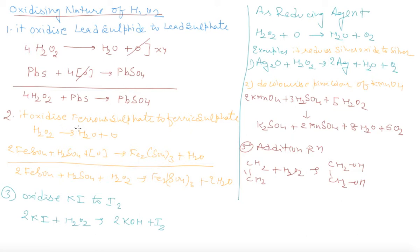In the same way it oxidizes ferrous sulfate to ferric sulfate. It is an oxidizing agent. It can take electrons and give oxygen. FeSO4 plus H2SO4 in acidic medium with H2O2 gives ferric sulfate and H2O.